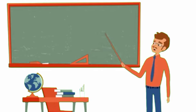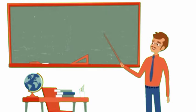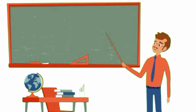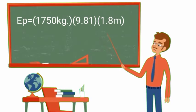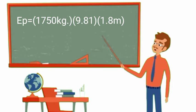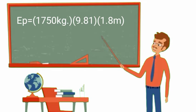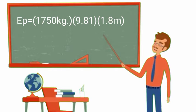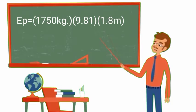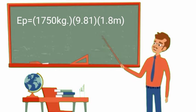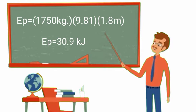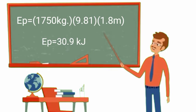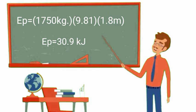The next thing we should do is to plug in all the given data to our formula. So the potential energy equals the mass of 1,750 kg times a constant of 9.81 for gravity times the height of 1.8. Then multiply: 1,750 times 9.81 times 1.8 equals 30.9 kJ. So this is the value of our potential energy.